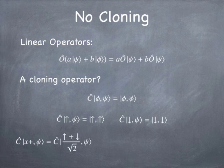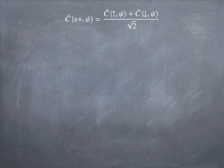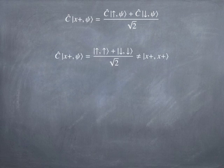The cloning operator is a linear operator. So if you apply it to a superposition state, that's the same thing as applying it to the first state plus applying it to the second state. And of course that is going to turn out to be up-up plus down-down. But that state is not the same as the state |x+⟩|x+⟩, which is the state we were trying to achieve by cloning the x-plus state.